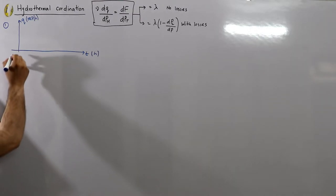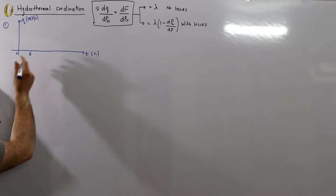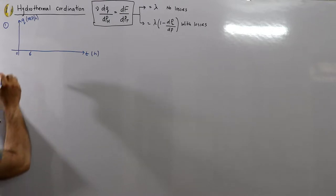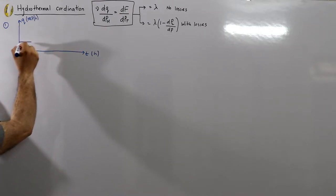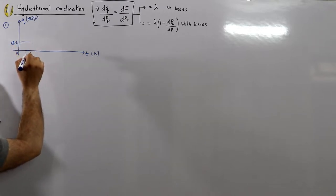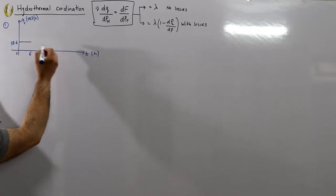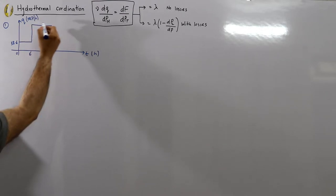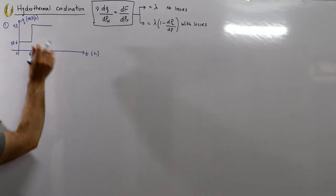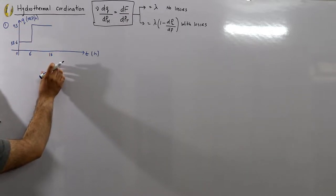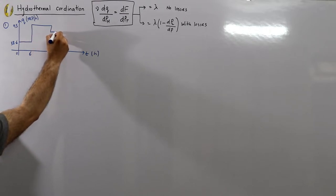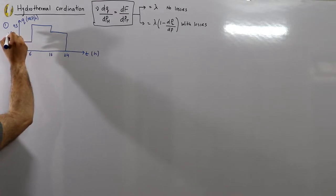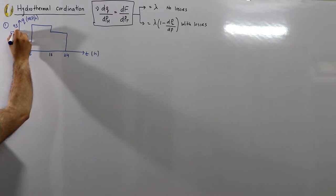For the first six-hour duration, the discharge is 38.6 million cubic feet per hour. From hour 6 to 16 — that is, for 10 hours — the discharge is 93. For the remaining 8 hours (24 minus 16), the discharge is 63.6. This is the given daily discharge curve.